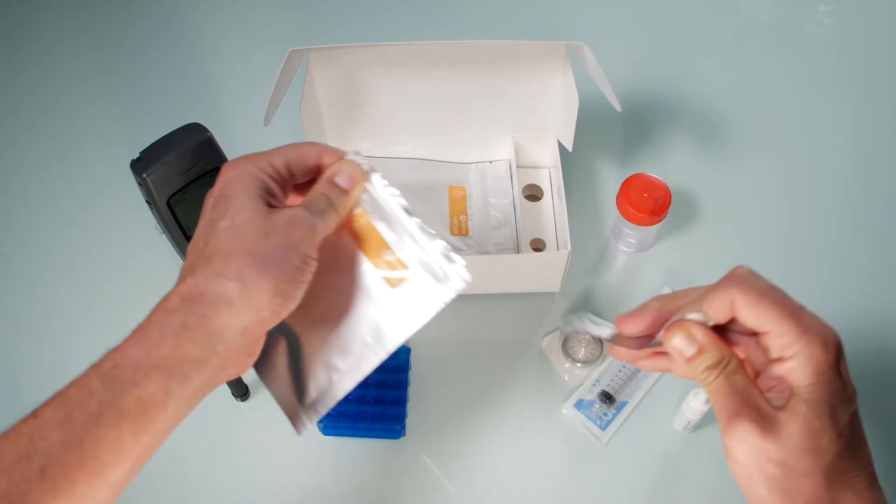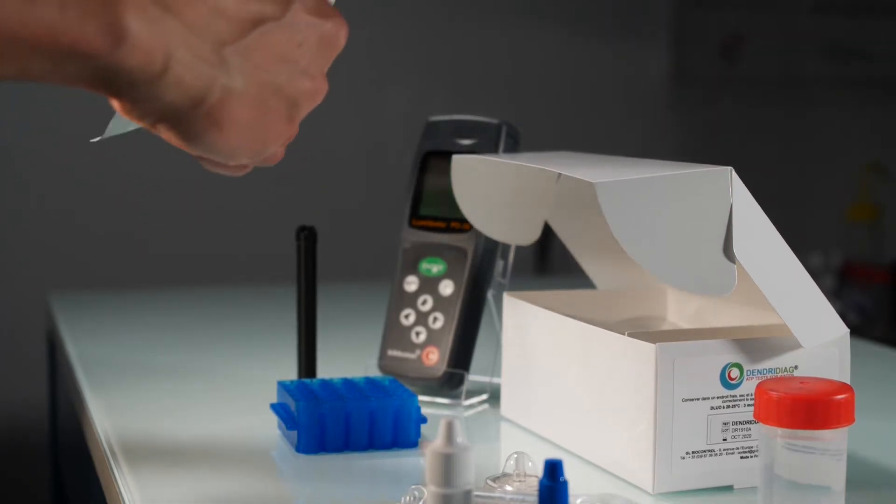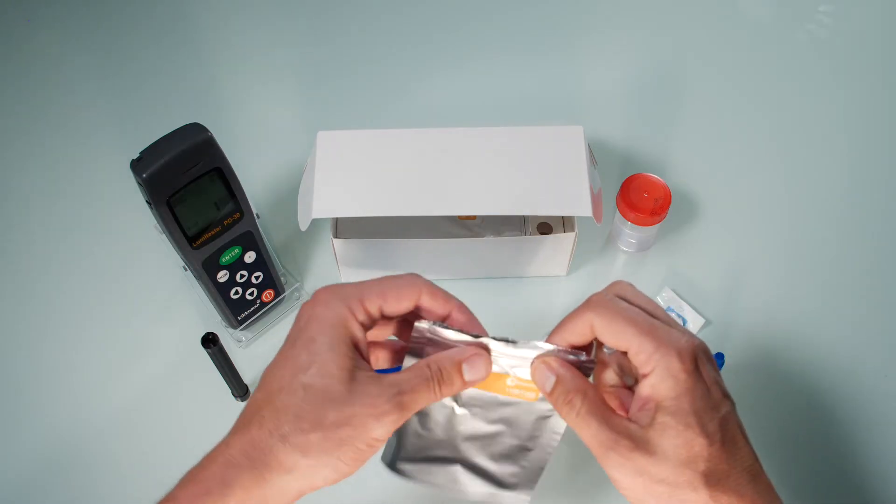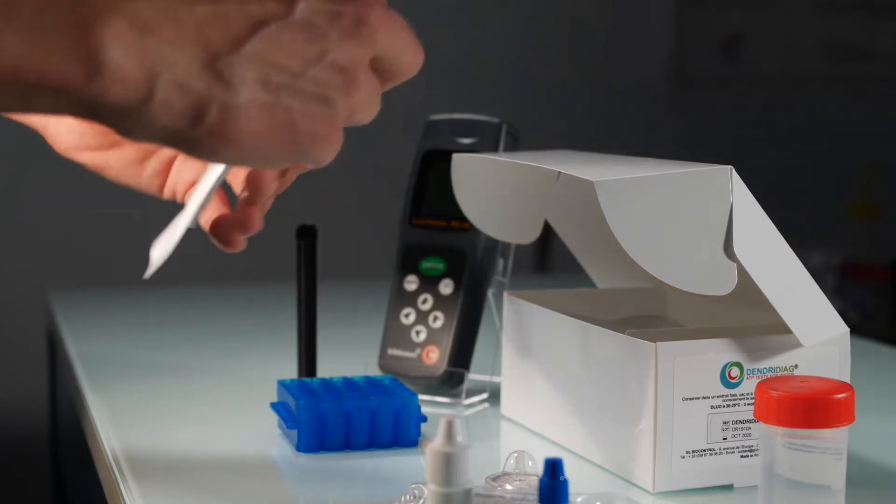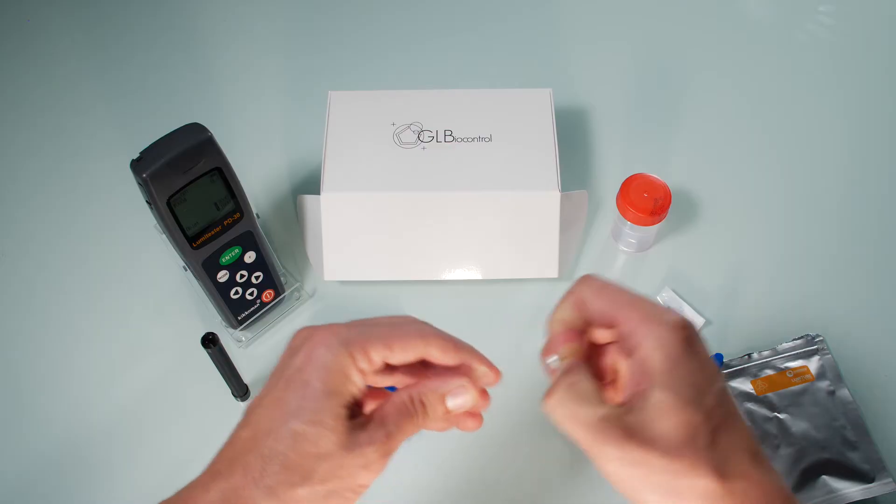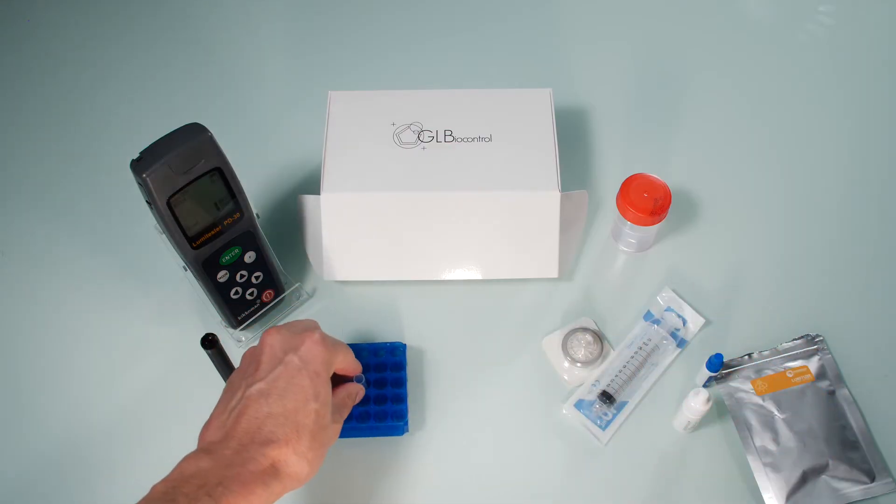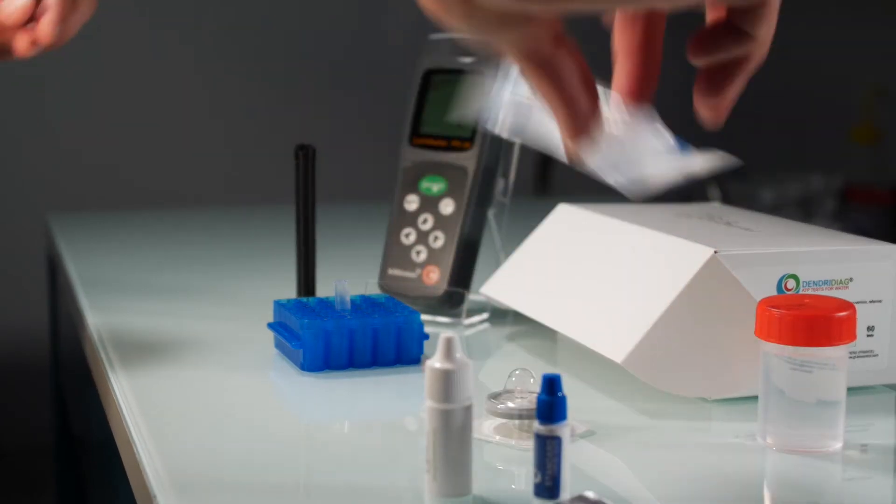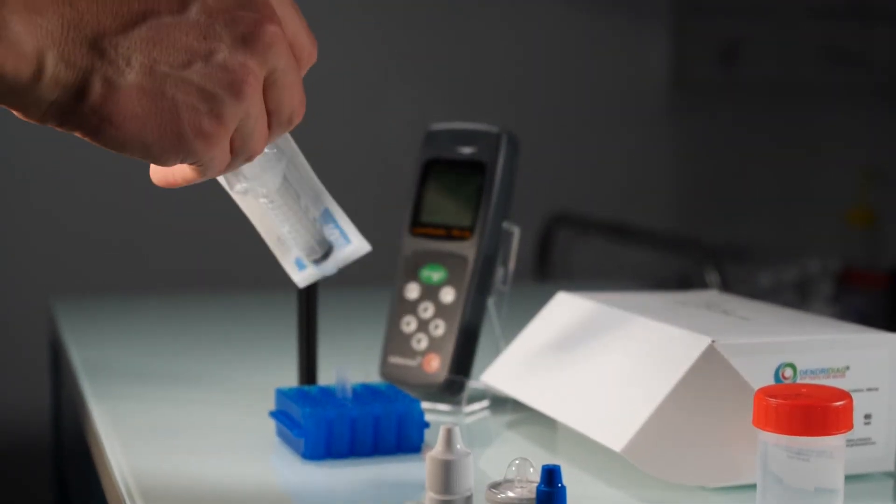Open the lumi tube pouch and remove one tube. Ensure that you firmly reseal the pouch. Peel the foil lid from the lumi tube and put it in a rack. The tube contains a small white tablet containing enzymatic compounds.